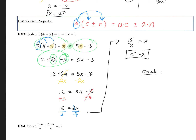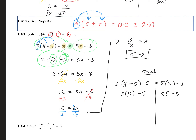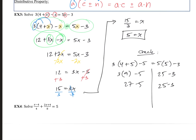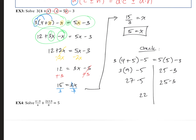Let's check by plugging in 5 for x: 3(4 + 5) minus 5 equals 5(5) minus 3. That gives 3 times 9 minus 5 equals 25 minus 3, so 27 minus 5 is 22 and 25 minus 3 is also 22. This checks out. If you're told to check your work on an exam, always state that you are checking and show your work clearly.